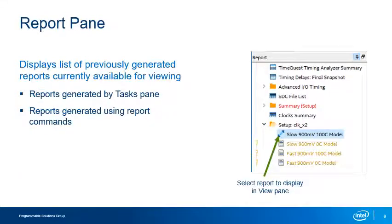The Report pane displays a list of all reports currently available for viewing. These reports may have been generated by tasks executed from the Task pane or by using reporting commands directly in the console or in a script file. To view a report, simply select it. Once a report is created, it is always available here until the Timing Netlist is reset.